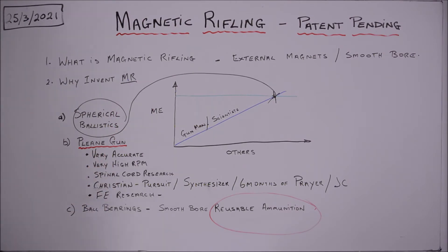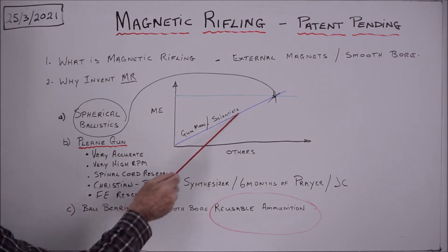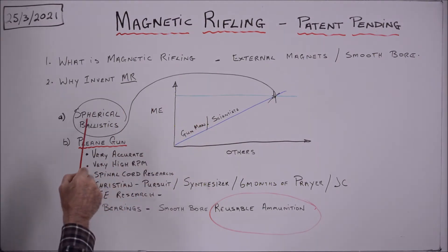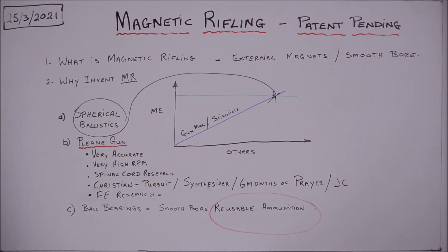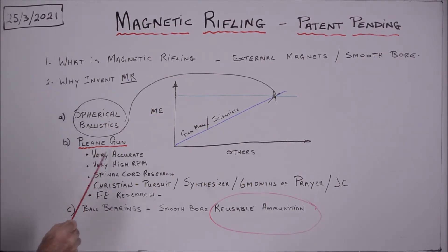Why invent magnetic rifling and smoothbores? We have perfected the rifle barrel. It's made very economically, very accurate today. Why go back to old smoothbore barrels? Well, we're all on this journey and we hit a common point around the denominator of spherical ballistics. If anyone follows my channel you'll know that I invented a plane gun which is very accurate with very high RPM, and I needed a way of magnifying the spin rate without increasing the RPMs. I came across this concept of magnetic rifling.